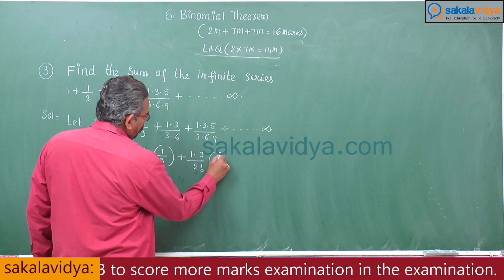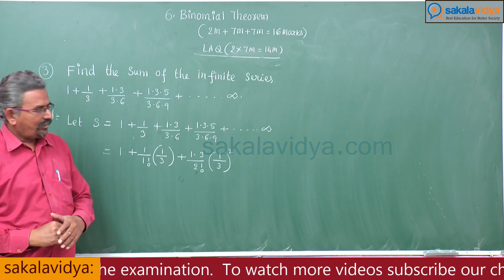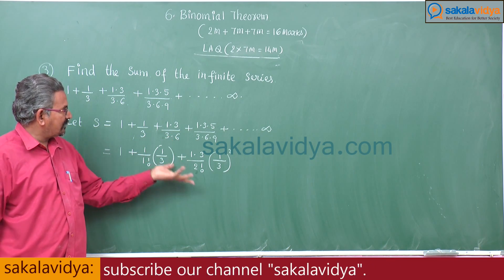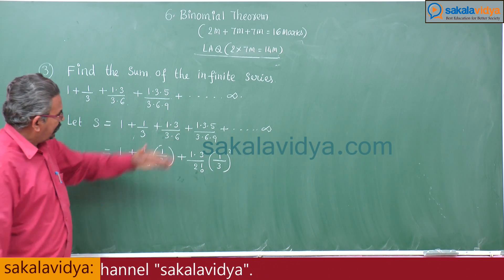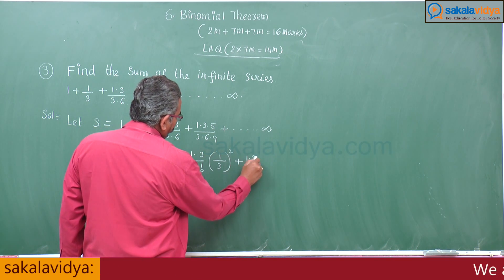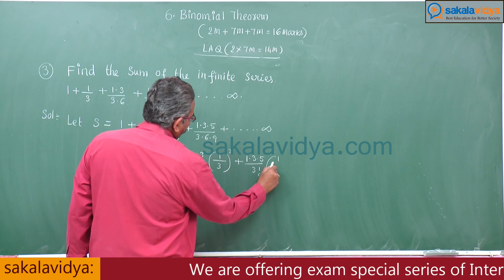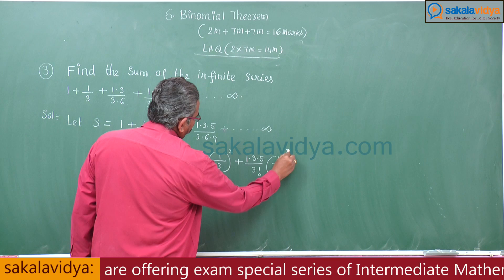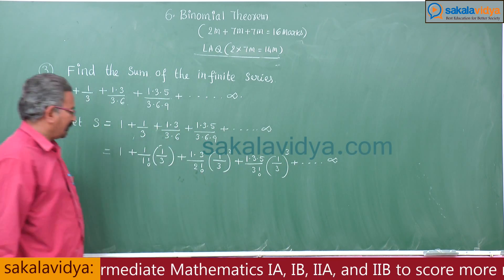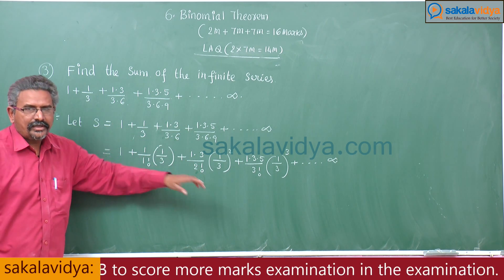By observation, we can write this simply as: 1 + (1/1!) · (1/3) + (1·3)/(2!) · (1/3)² + (1·3·5)/(3!) · (1/3)³ and so on up to infinity. This puts the series into standard form.